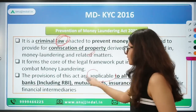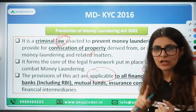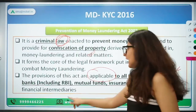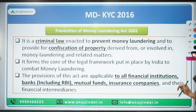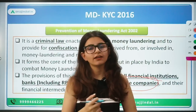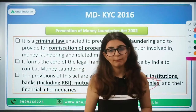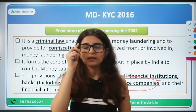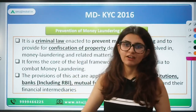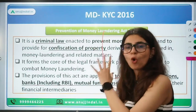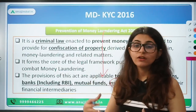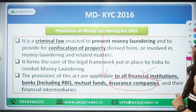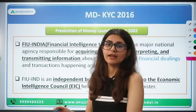The provisions of this act are applicable to all financial institutes, including the RBI, other mutual funds, and insurance companies, because through them money laundering and terror financing can also occur. For example, if a bank is giving credit facilities to somebody and using a fake Aadhaar card or fake document, that person can utilize the credit facility for money laundering or terror financing. That's why the provisions of PMLA are applicable to all financial institutes that can be used as channels towards money laundering.